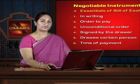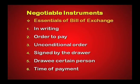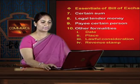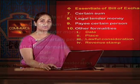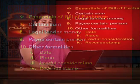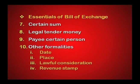The essentials of a bill of exchange are: it must be in writing; there must be an unconditional order to pay; it must be signed by the drawer; the drawee must be a certain person; the time of payment should be stated; a certain sum of legal tender money must be specified; the payee must be a certain person; and other formalities like date, place, lawful consideration, and a revenue stamp — meaning the bill of exchange must be made on stamp paper.